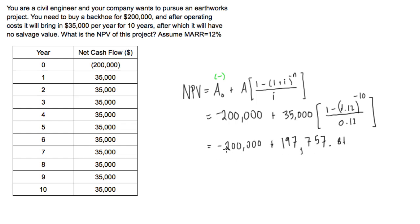Okay, so this obviously is going to be a negative number because negative 200,000 plus 197,000, we're going to get our net present value. This is going to equal negative $2,242.19.